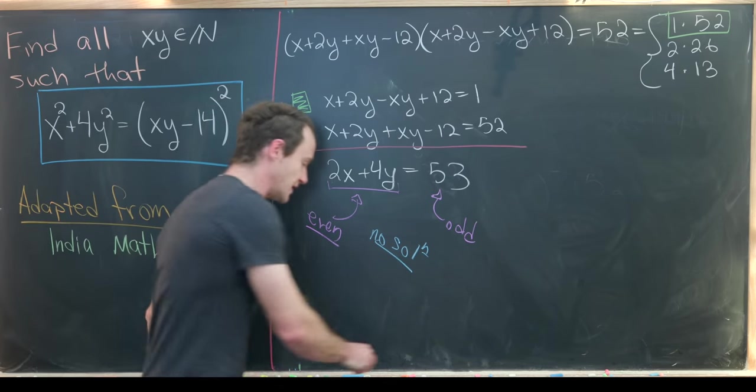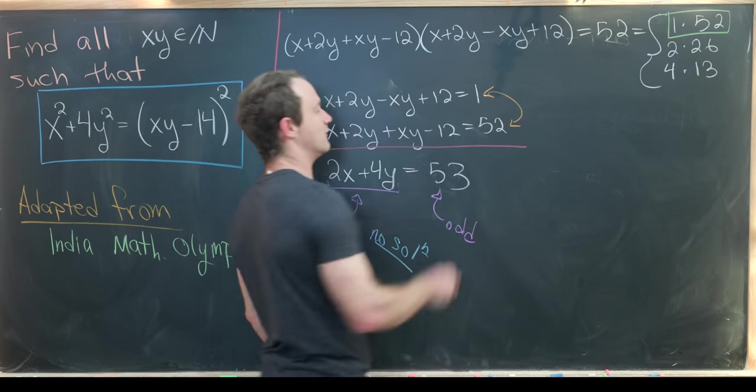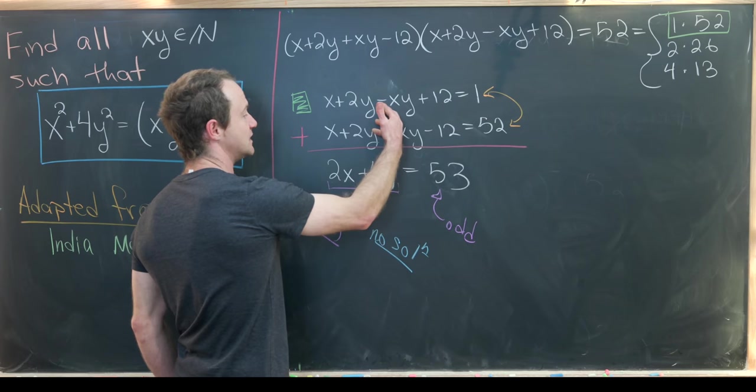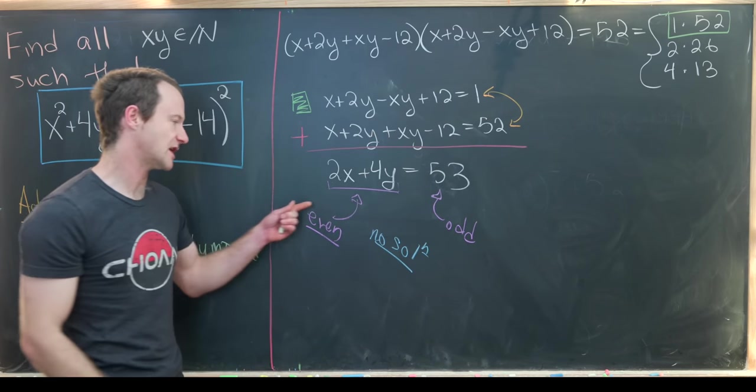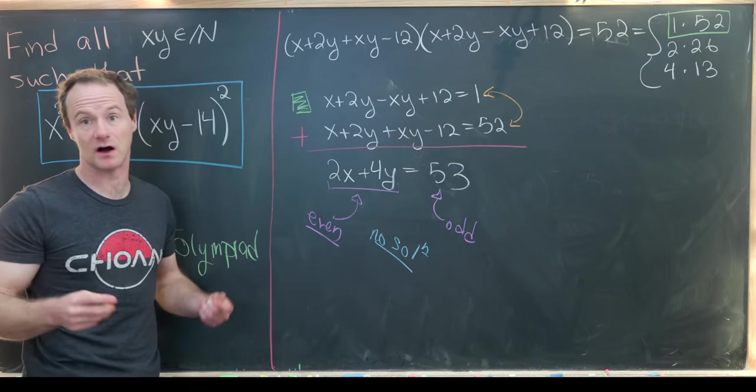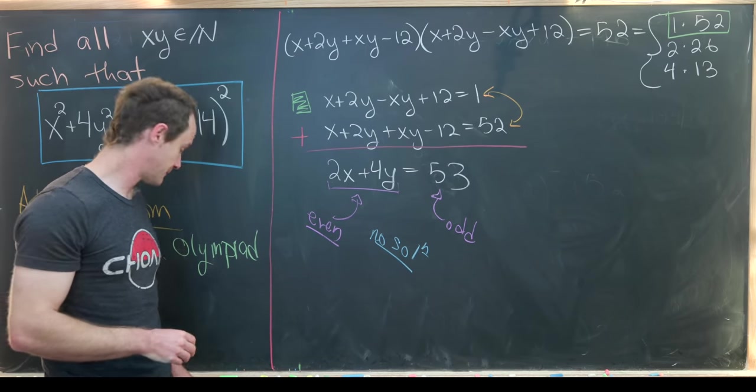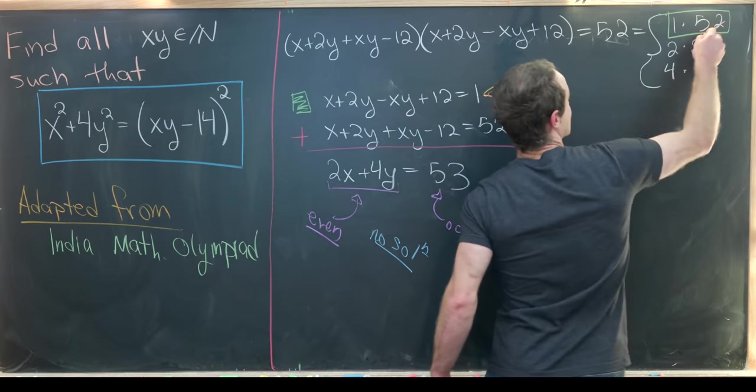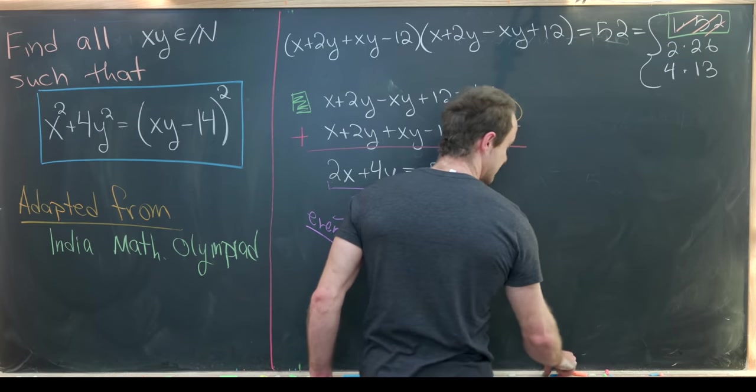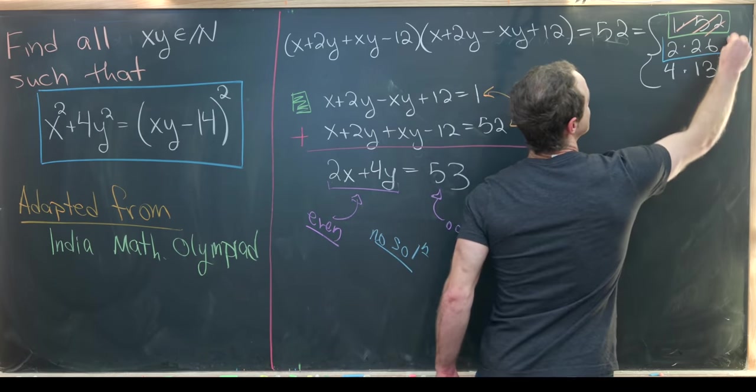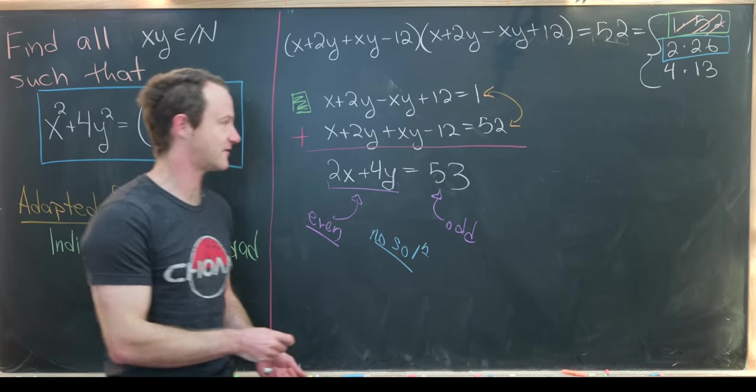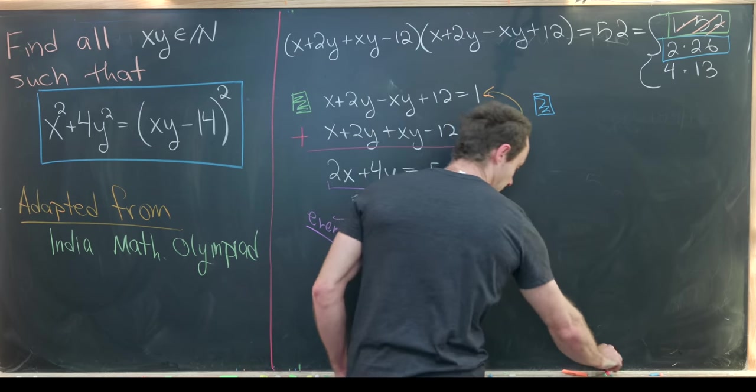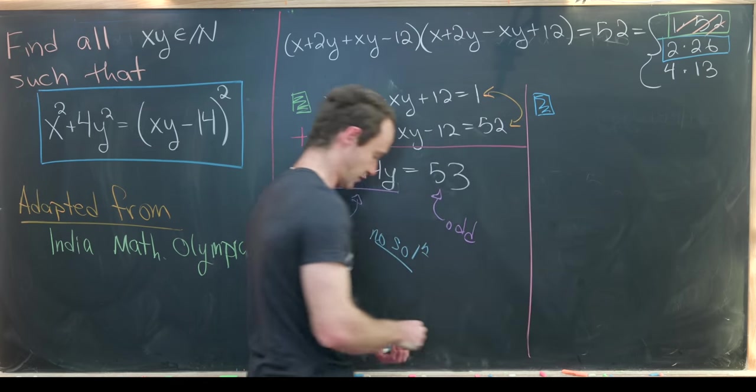That means there's no solution based off of this first case. Notice that we could flip who is playing the role of 1 and 52 and come up with the same result because we took this sum to get 53 and you'd end up with this even and odd conundrum no matter what you do here. So now that we've seen that this possible factoring is not possible, let's move on to this 2 times 26 factoring. Maybe I'll put a square of blue here to show that that's what we're working on.